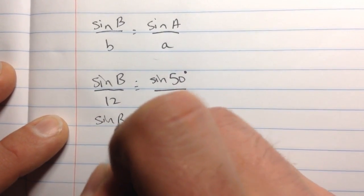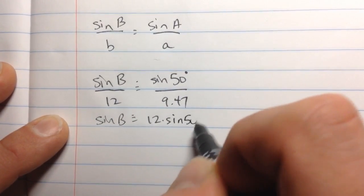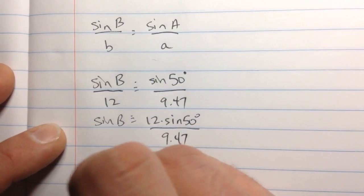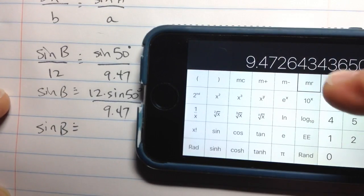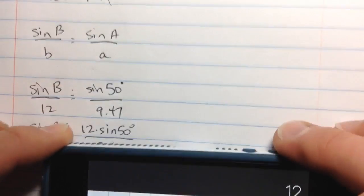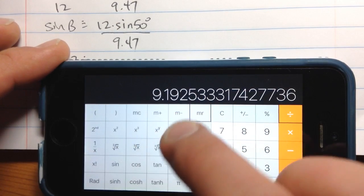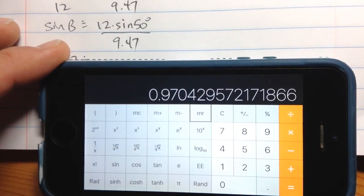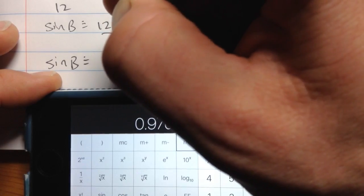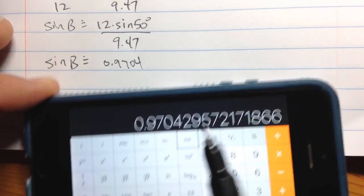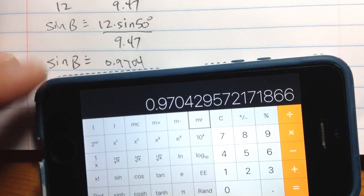Now we solve this. Sine B is equal to 12 times the sine of 50, divided by 9.47. I'm going to evaluate this. The sine of B equals 12 times the sine of 50, divided by 9.47. I got 0.9704, approximately. And now I'll do a sine inverse on that value to find out what angle B is. Let's do sine inverse, second function, sine inverse. Looks like it's about 76 degrees.